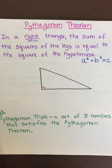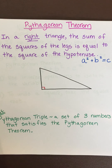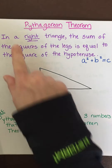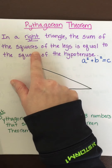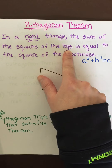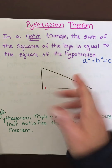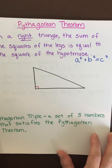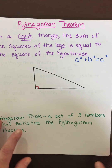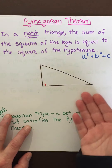Today we're going to do a review of the Pythagorean theorem. It's really important and it's used in a lot of geometry concepts — it's all over the SAT. The Pythagorean theorem states that in a right triangle, the sum of the squares of the legs is equal to the square of the hypotenuse. The formula is a squared plus b squared equals c squared.